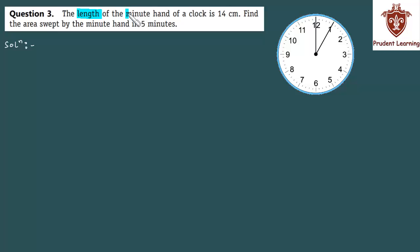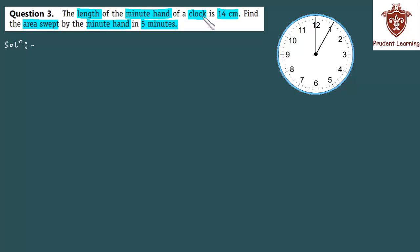The length of the minute hand of a clock is 14 centimeters. Find the area swept by the minute hand in five minutes. Is question mein clock ke minute hand ka length 14 centimeter given hai, aur ye bata na hai ki five minutes mein ye minute hand kitna area sweep karega. Jab clock pe based question ho aur clock ka shape mentioned na ho, to by default hum clock ko circular assume karke question solve karte hain.